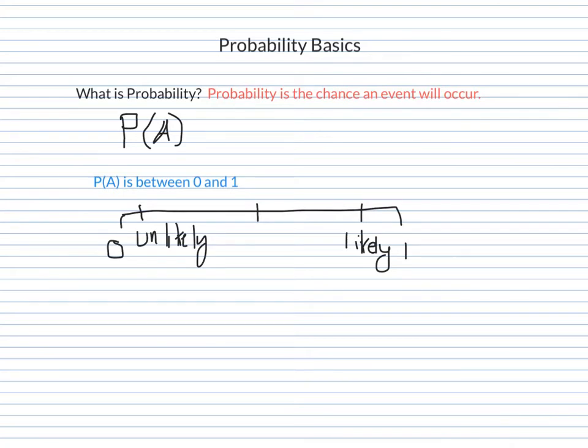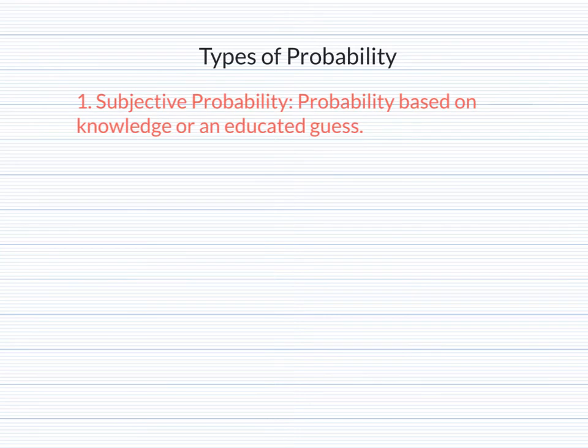Now that we know what probability is, let's take a look at the types of probability. The first type of probability is subjective probability. Subjective probability is probability based off of knowledge or an educated guess. Examples of this would be the probability of getting hit by lightning or the probability of a meteor hitting the earth. We don't know the exact probabilities of those, so we have to use an educated guess to figure that out.